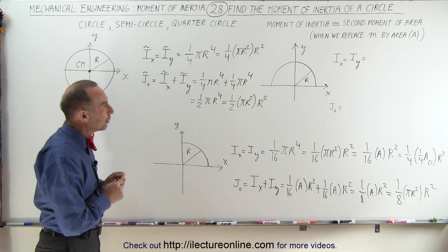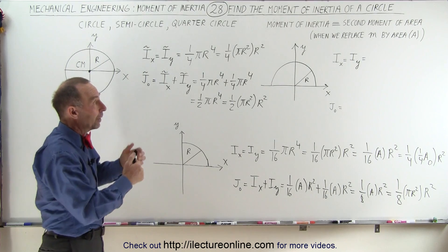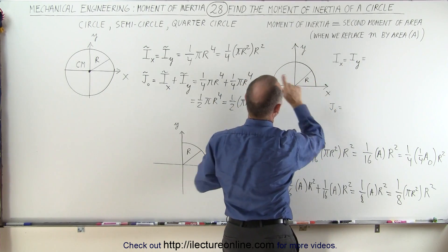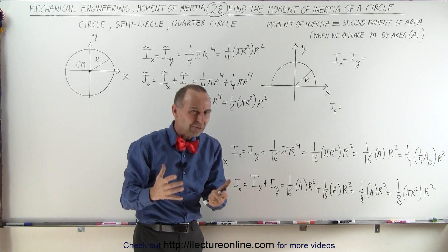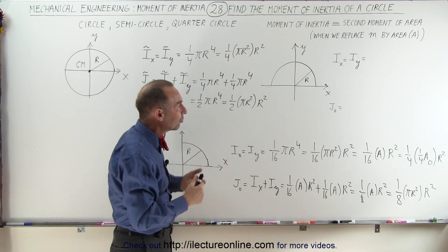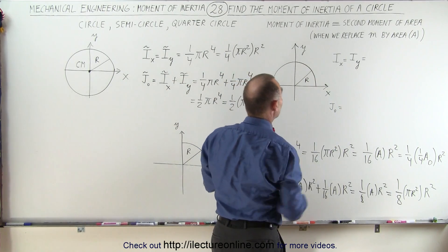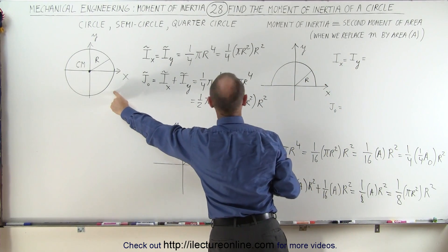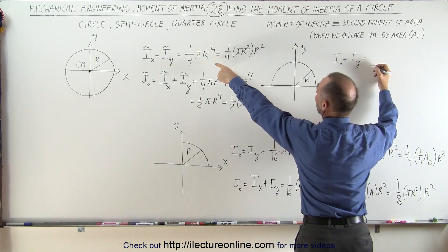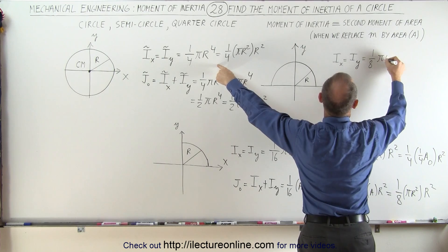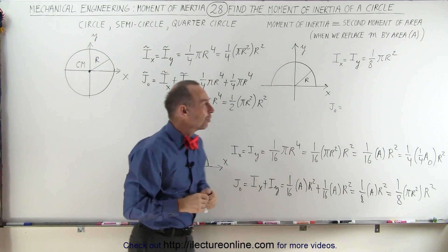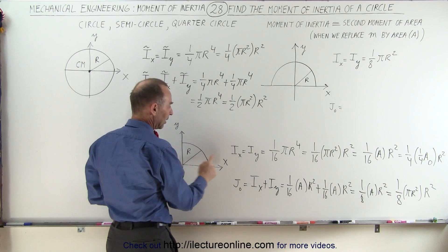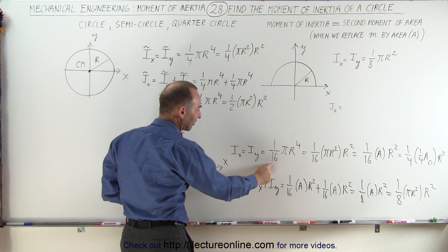Now let's look at how to find the moment of inertia of a semicircle. It seems that Ix equals Iy — the moment of inertia about the x-axis should be the same as about the y-axis. Let's do the x-axis first. It should be half the moment of inertia of a full circle since we only have half a circle, so that equals one-eighth pi r to the fourth. For the y-axis, if we take a quarter circle, it will be one-sixteenth pi r to the fourth.